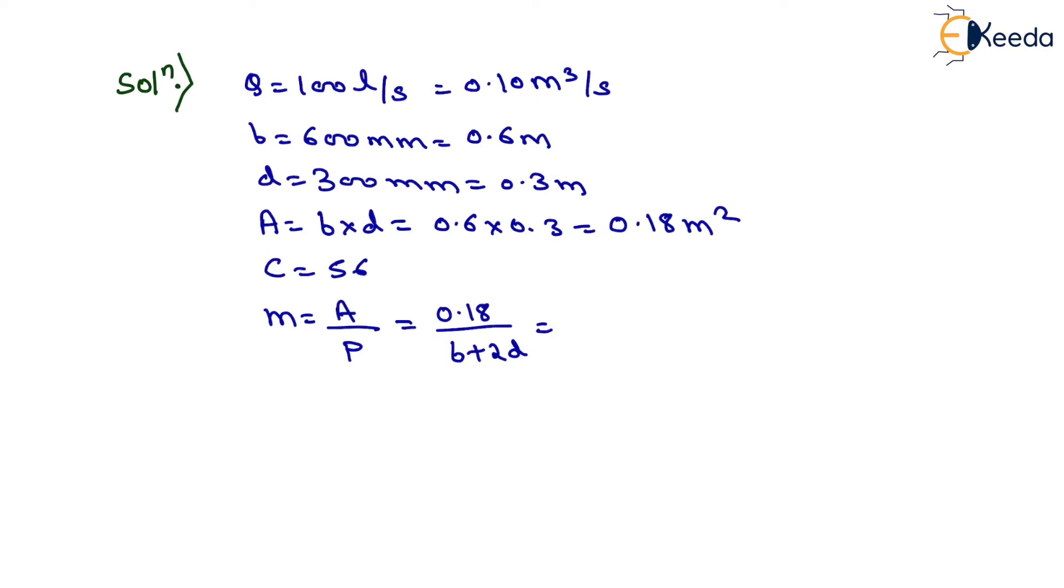We put the values of B and D: 0.6 plus 2 times 0.3. On solving, we get the hydraulic mean depth equals 0.15 meter.